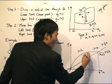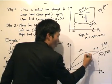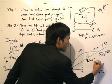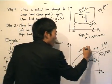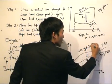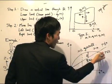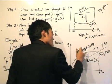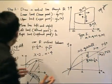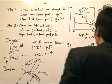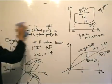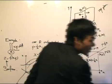Now let's apply the steps. Draw a vertical line through region R. Going down, we reach the line Y = X/2, so G1 = X/2. Going up, we reach the curve Y = √X, so G2 = √X. Moving left we get X = 2, moving right we get X = 4. So with these four quantities we can use the theorem from the last lesson and evaluate the double integral.